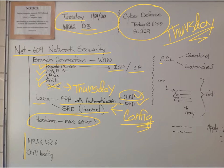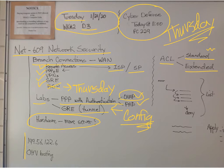We talked about access control lists. Standard lists, where we just look at the source. Extended lists, where we look at a variety of things. It's called a list because you actually have a list — a listing of lines.